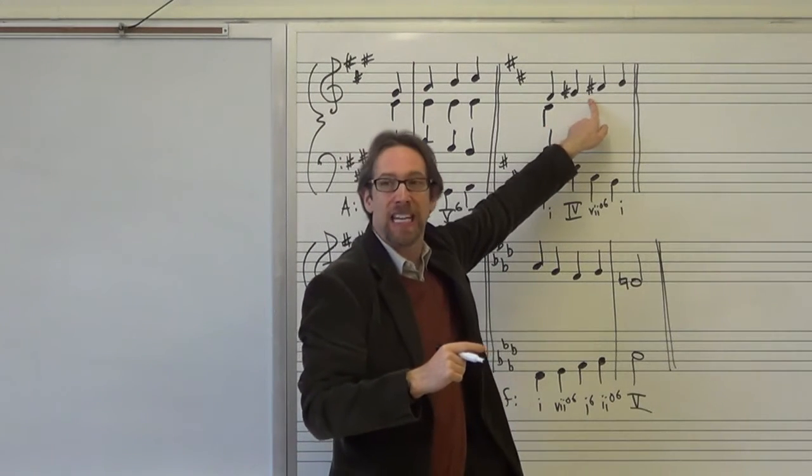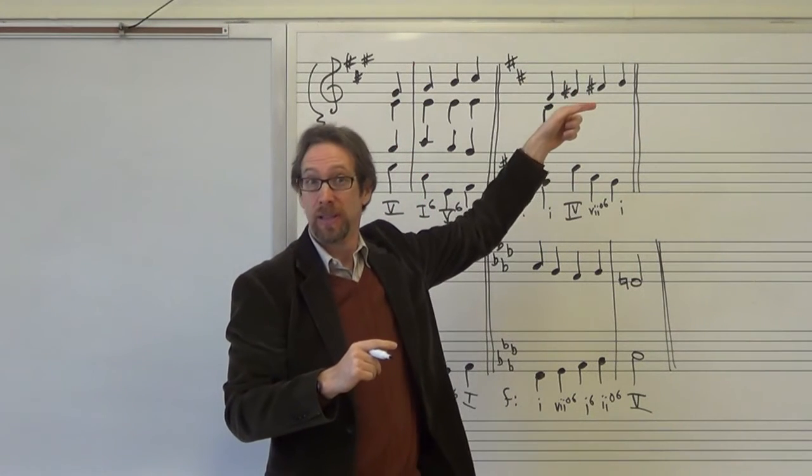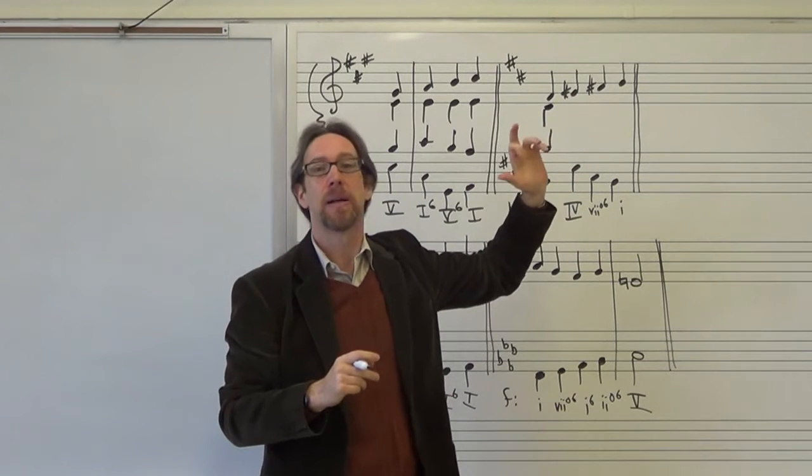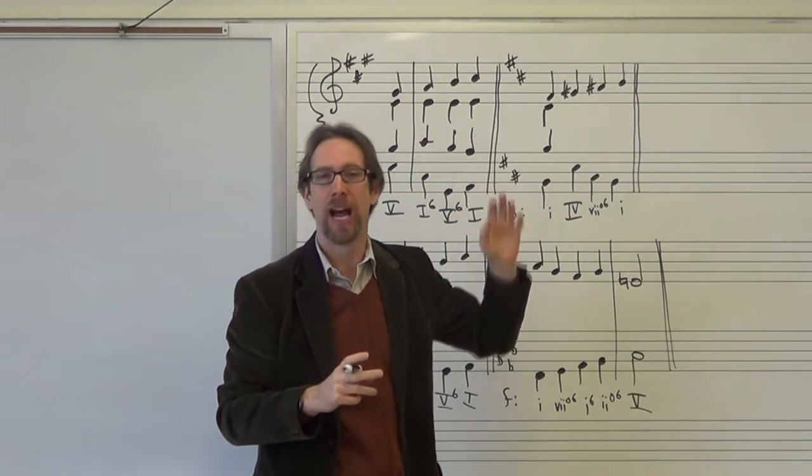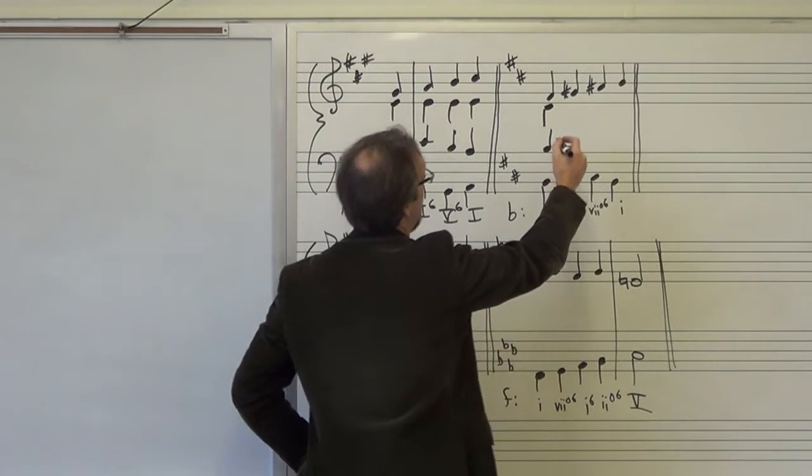When you have this ascending melodic line of so, la, ti, do, like the melodic minor, ascending melodic minor, you can sometimes put four as a major in a minor key. We can talk about that exception and how that works, but that's what's going on. But, we can analyze it just the same.